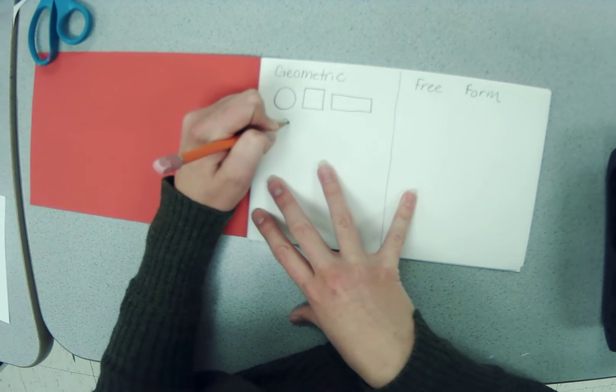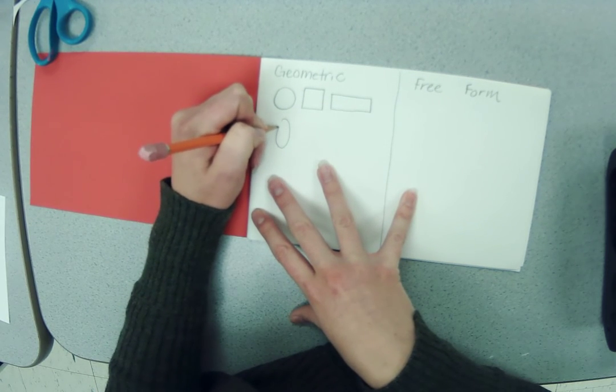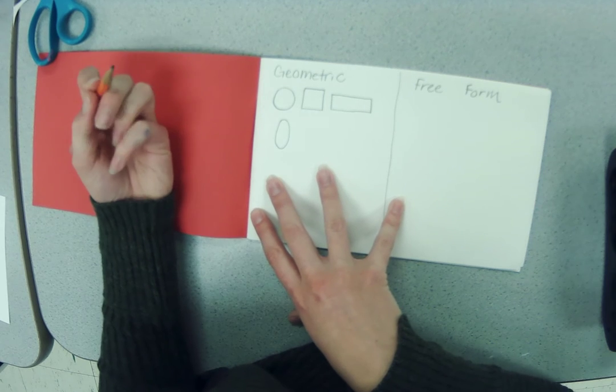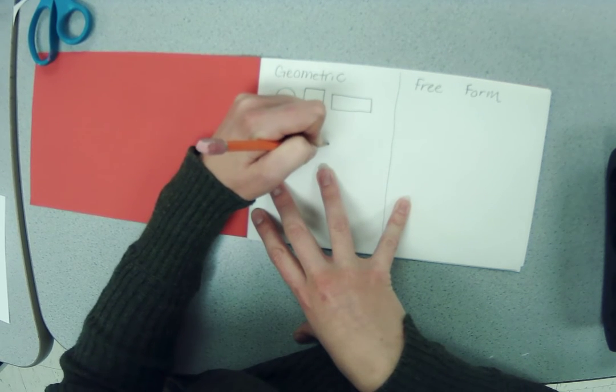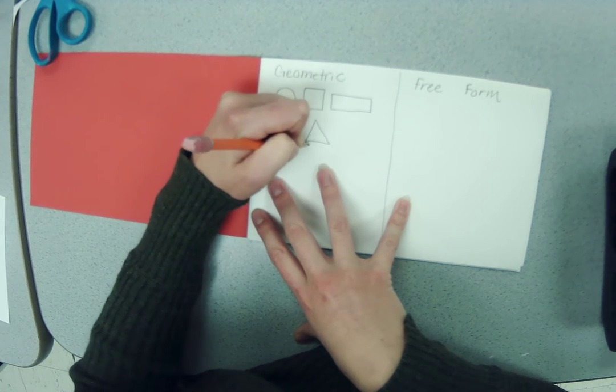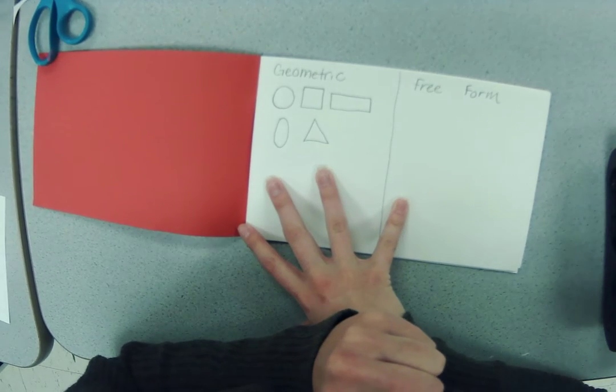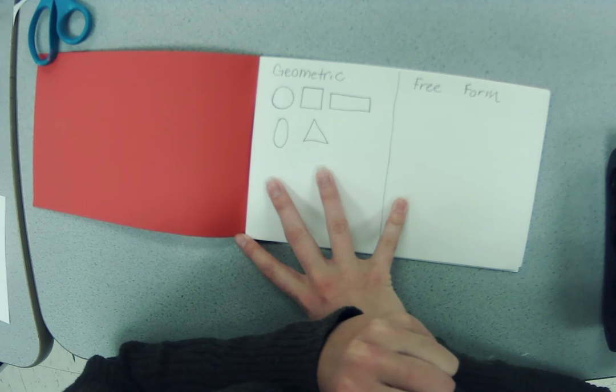I can practice an oval. I can practice a triangle. Triangles have three sides.